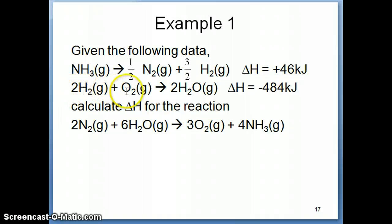And then the second reaction is 2H2 plus O2 forming 2H2O. Delta H is negative 484 kilojoules per mole of reaction. And you're being asked to calculate delta H for this reaction. This is what we refer to as a target reaction. So this is a reaction of interest and you have to somehow manipulate these two in order to get this reaction.